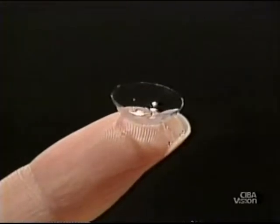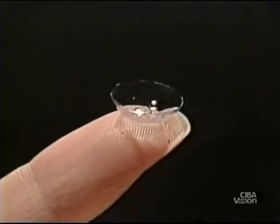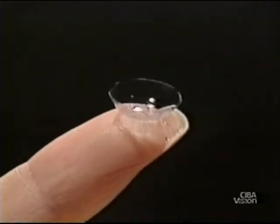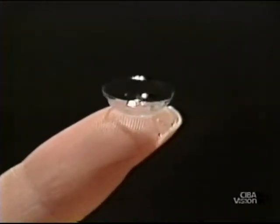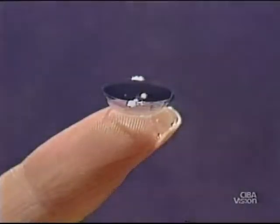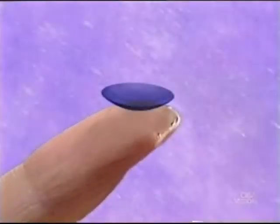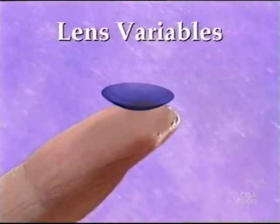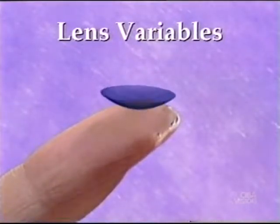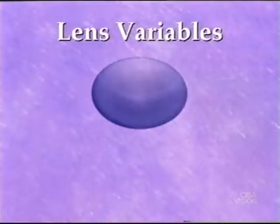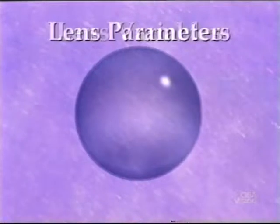A working knowledge of contact lens design principles is important to ensure successful contact lens fitting. The overall geometry of a contact lens is comprised of specific components or variables. The measurements of these variables are termed lens parameters.